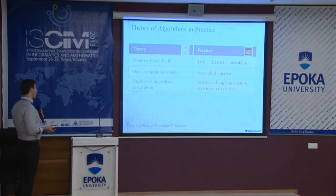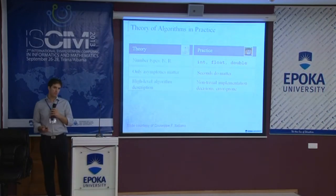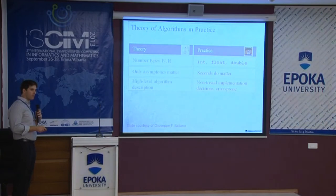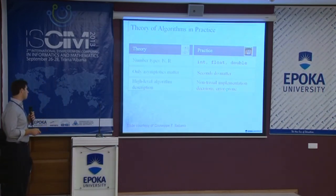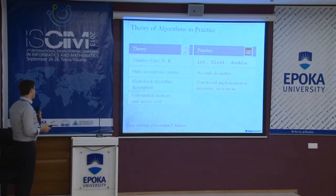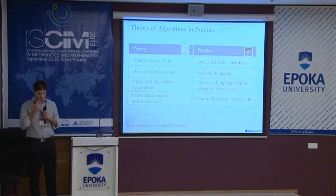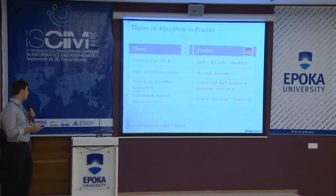In practice, when given a high-level algorithmic description, we face various decisions that affect implementation. In theory, we assume uniform memory access cost, but in practice this is not the case — we have memory hierarchies with parameters to think about. The usual assumption is that we count elementary operations and treat all as taking constant time, but in practice modern computers are much more complex.